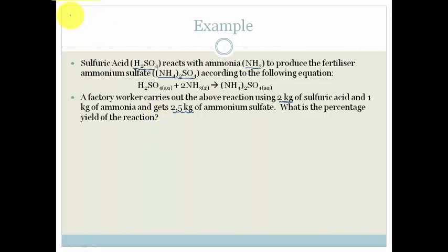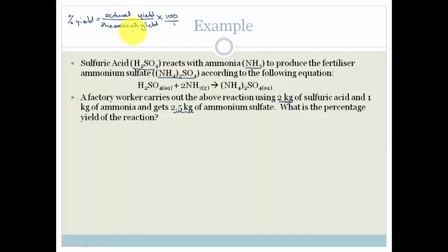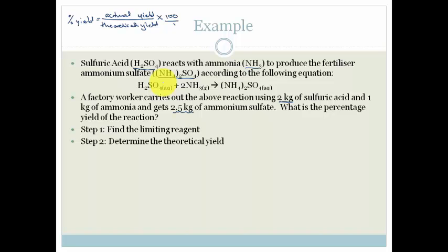The percentage yield is the actual yield over the theoretical yield, times 100 over 1. The actual yield is how much you actually get out, and the theoretical yield is based on the formula — if we had 1 mole of this and 2 moles of that, we should have got 1 mole out. The first thing we need to do is find the limiting reagent, then determine the theoretical yield, and finally determine the percentage yield.